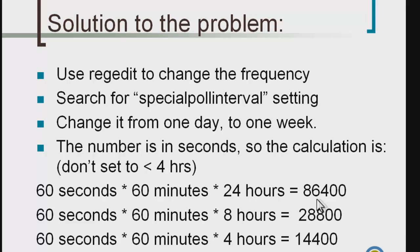Set it to 86,400 for 24 hours. If you want 8 hours, set it to 28,800. For 4 hours, set it to 14,400. I wouldn't go less than every 4 hours — if your system is that bad on time, you probably ought to get it repaired. If you check the time servers more than every 4 hours, they may ban you. It's better to stick with 8 or 24-hour periods.